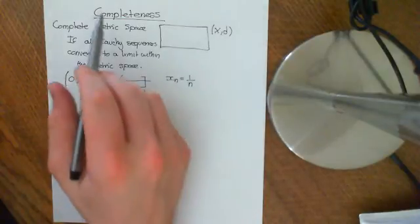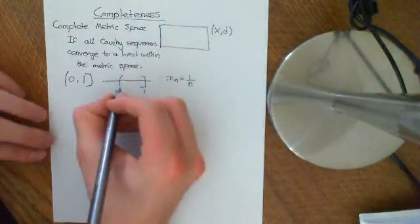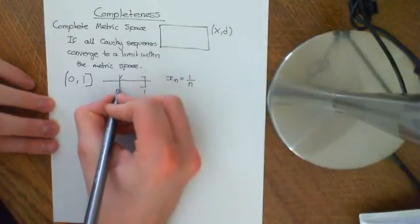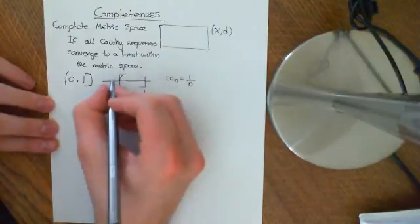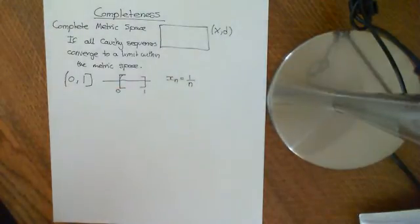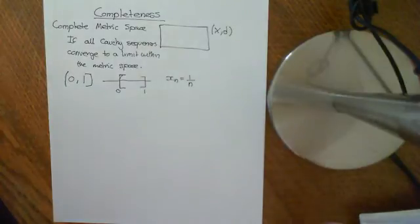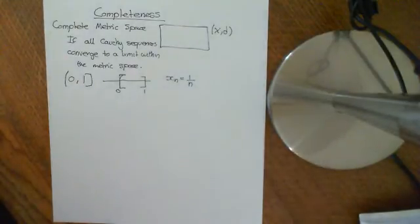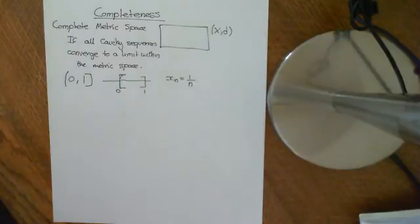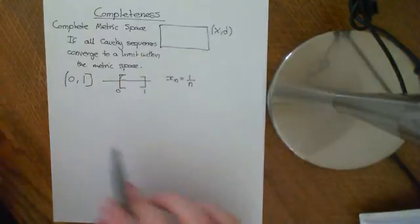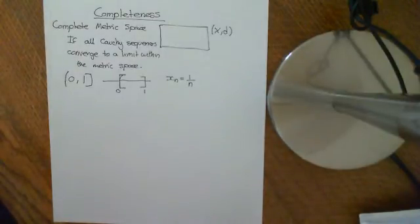That's where the term 'completeness' comes from. It almost feels like this metric space is missing a point — it needs that point 0, and if we added it in, then it would be complete. These metric spaces in which Cauchy sequences intuitively should converge but don't, it's because they are almost converging to a point that should be in the metric space but isn't. A complete metric space contains all the points that should be in it — i.e., all Cauchy sequences do converge to a limit within it.